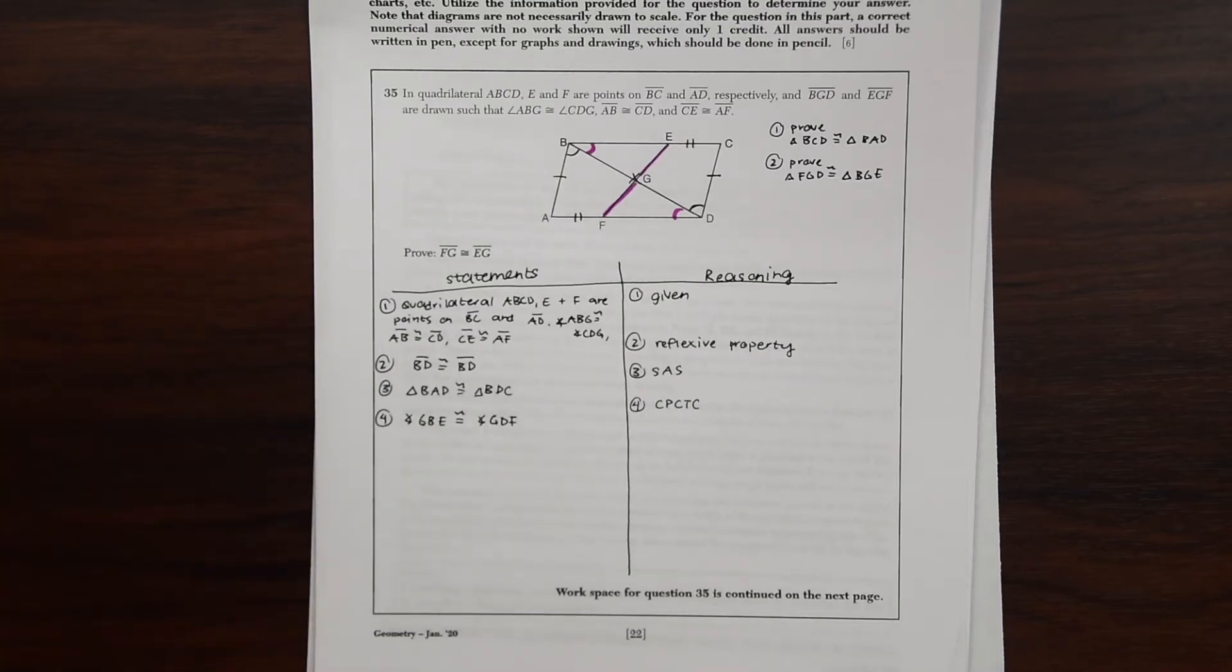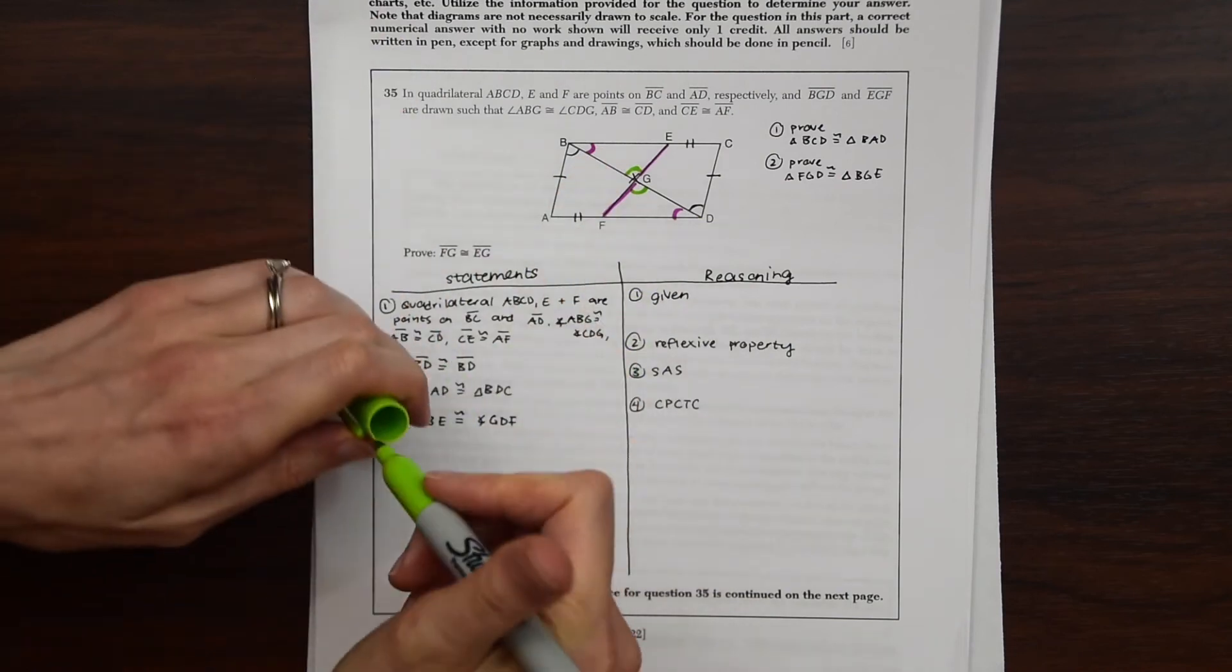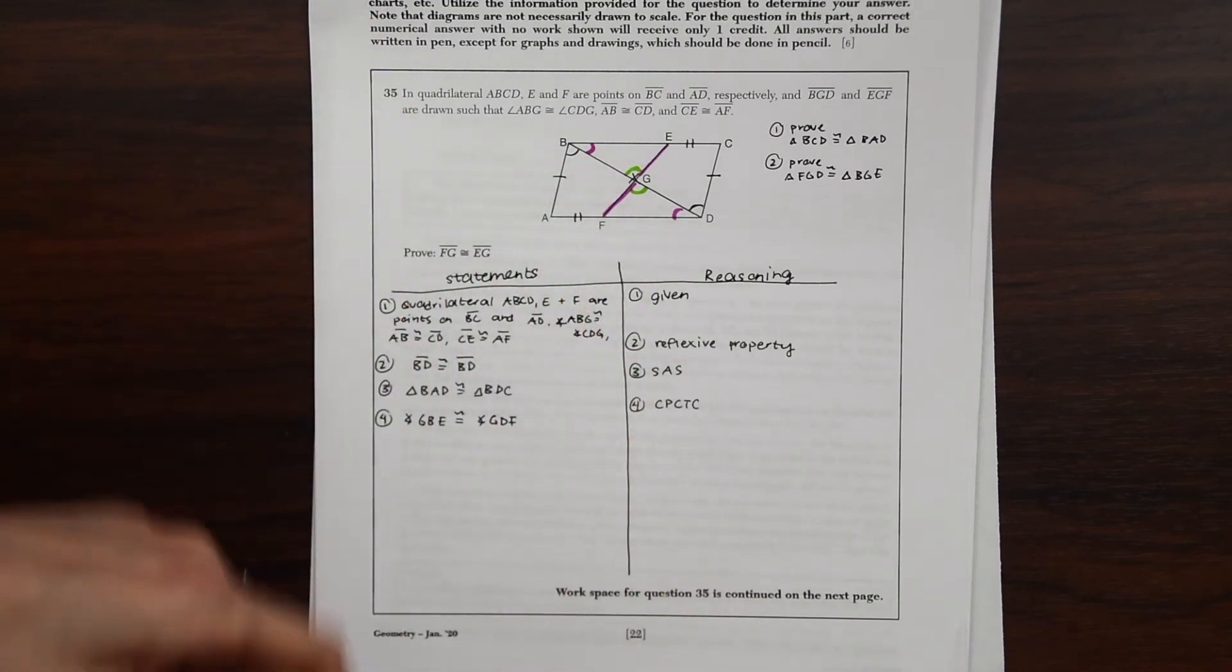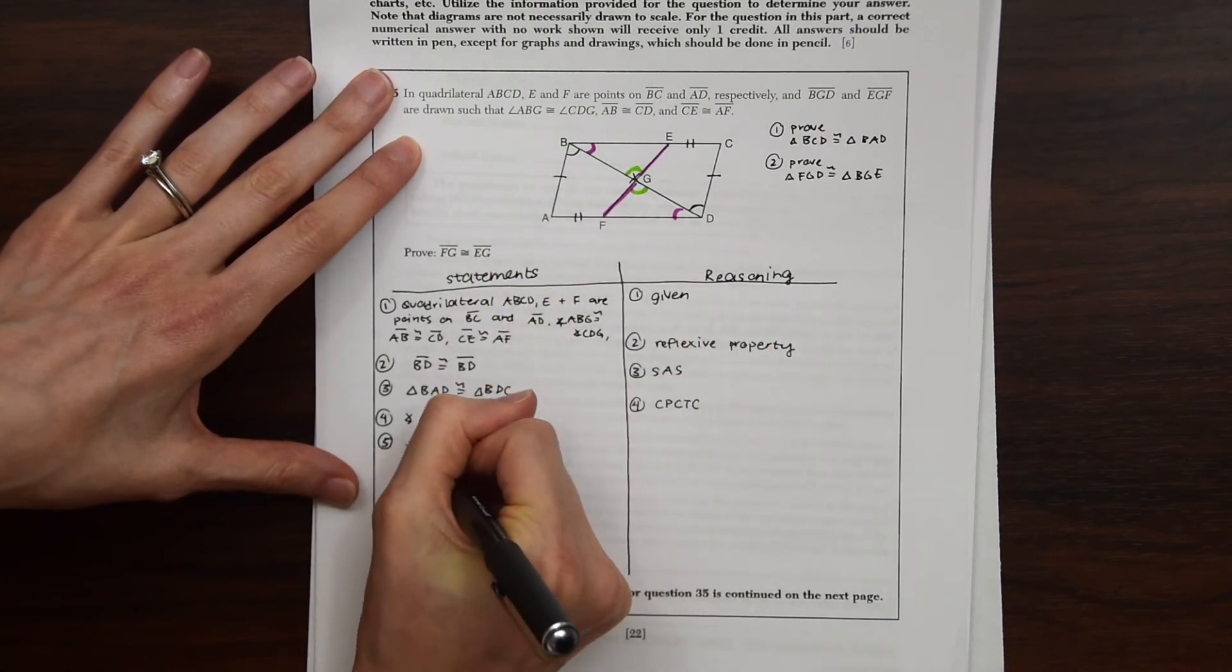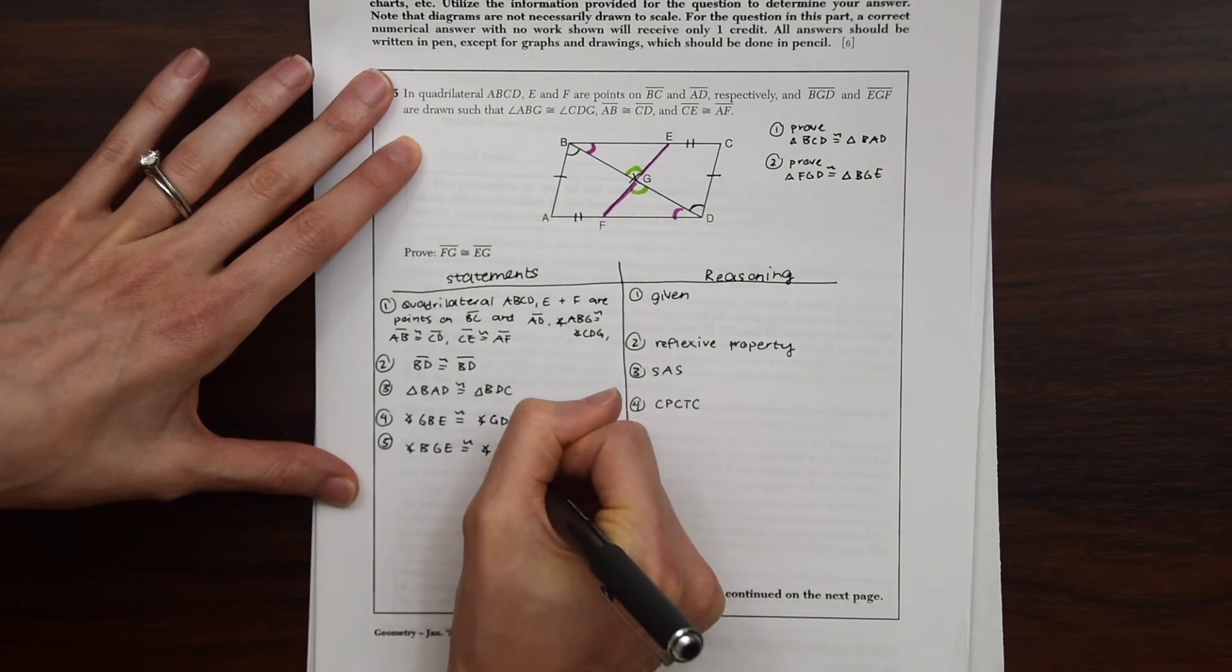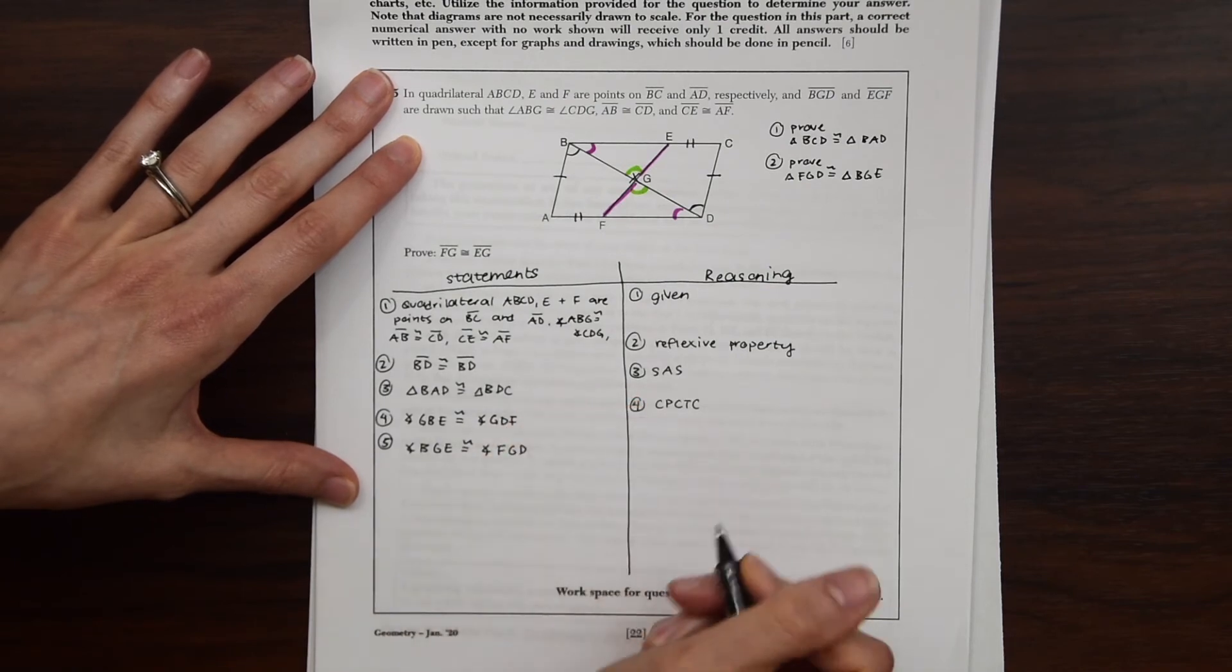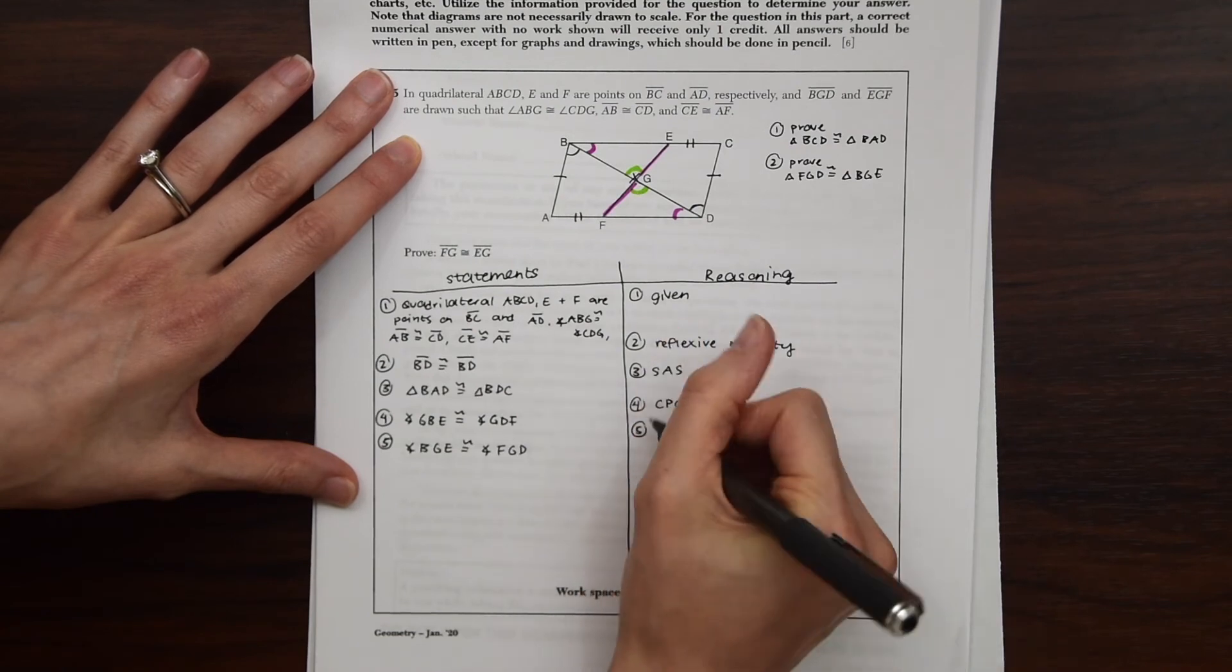What else can we say? Notice we have these two angles right here, these vertical angles. We know those are going to be congruent to each other also based on vertical angles. So angle BGE is congruent to angle FGD. And this is because of vertical angles.